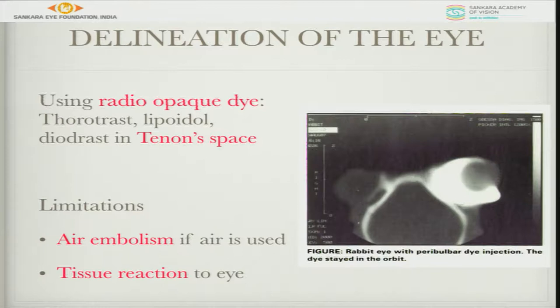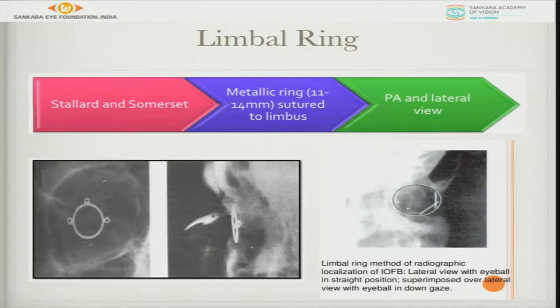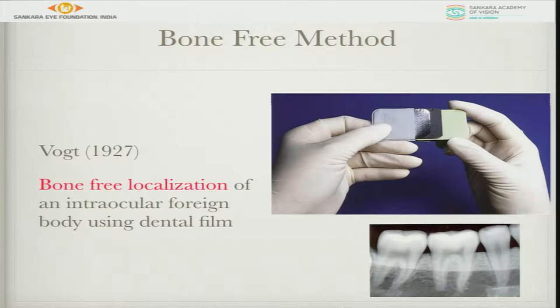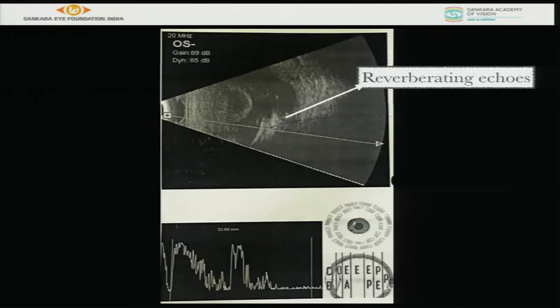You can also take a stereoscopic photograph — not very common — and there is an injection in the Tenon's space that can be done, though not frequently followed. The limbal ring is more commonly used historically. A bone-free material approach and contact lens method are also not commonly used now. Ultrasonography is more important.